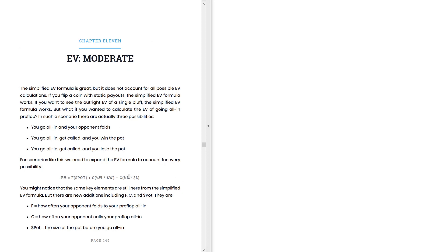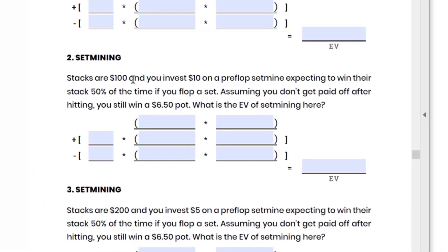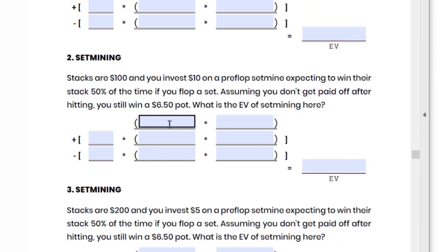I'll leave a link in the description box for the advanced EV formula video, which looks scary at first glance, but once you work with it a little it gets easier. We're going to skip ahead and continue the set mining conversation by doing number two. Very similar setup: stacks are $100, we're investing $10 on a preflop set mine, but instead of getting a full payoff every time we flop our set, we're only expecting to win their stack half the time. When we don't get paid off after hitting, we're still winning a $6.50 pot. So what is the EV of set mining here? Take a moment and think about whether this is plus EV or negative EV.